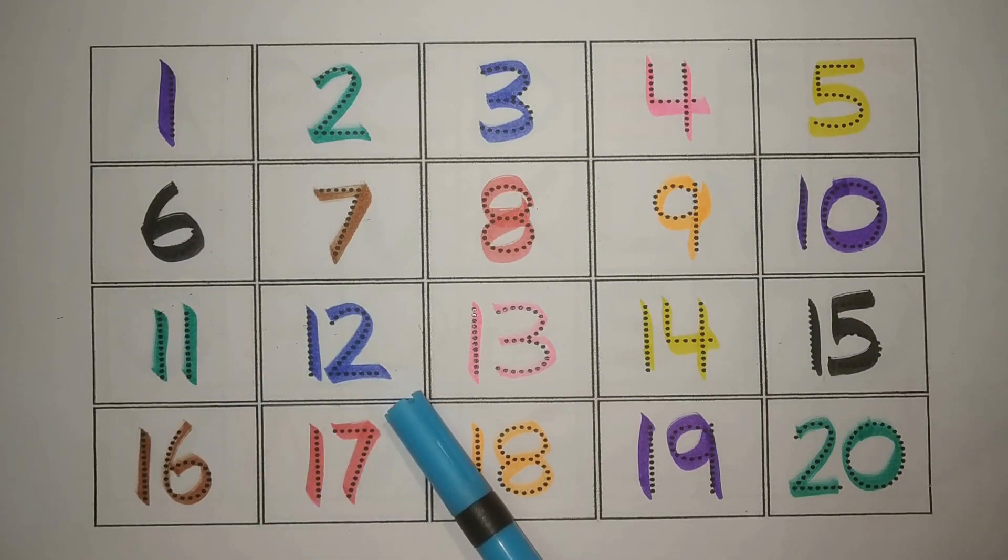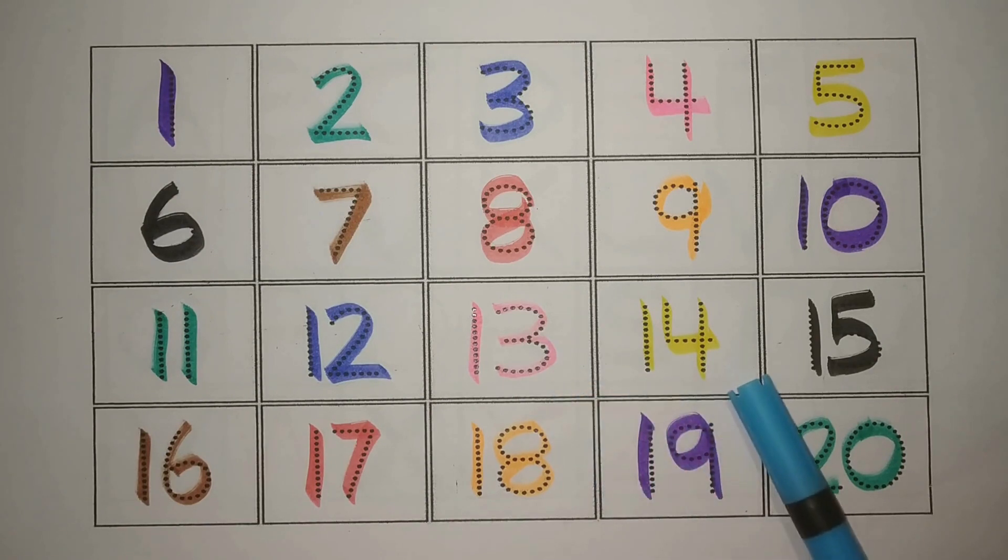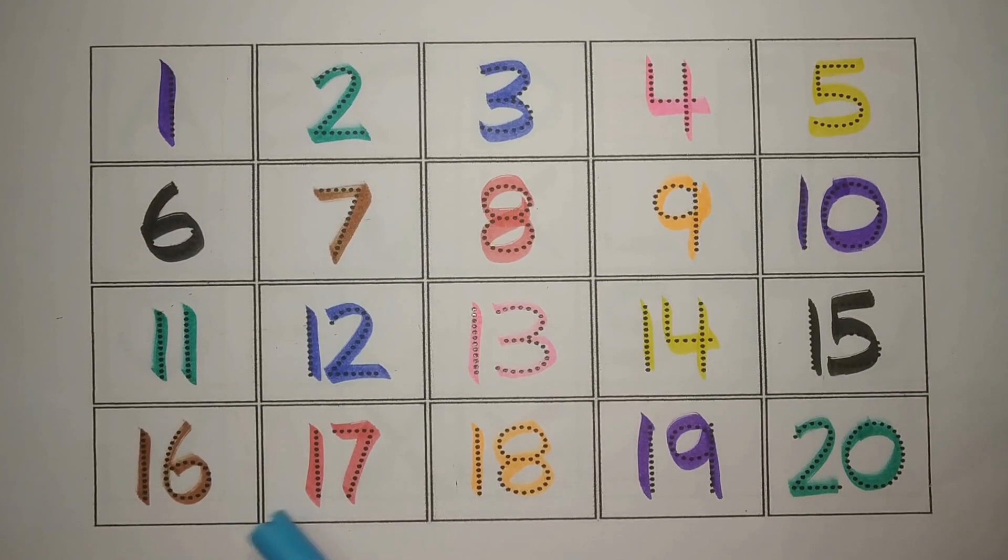One one eleven green, one two twelve blue, one three thirteen pink, one four fourteen yellow, one five fifteen black, one six sixteen brown, one seven seventeen red, one eight eighteen orange, one nine nineteen purple, and two zero twenty green.